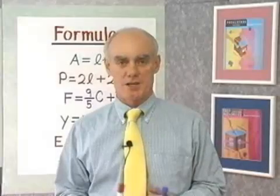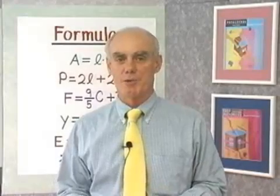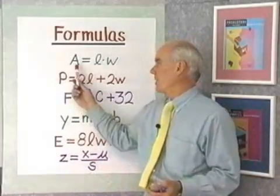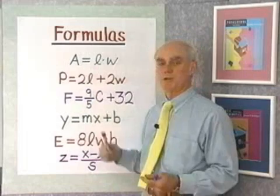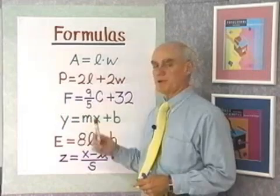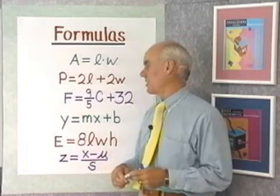A formula in mathematics is an equation that involves more than one variable. I've written some fairly common formulas over here on the board. A equals L times W, that's the formula for the area of a rectangle. P equals 2L plus 2W, that's the formula for the perimeter of a rectangle.